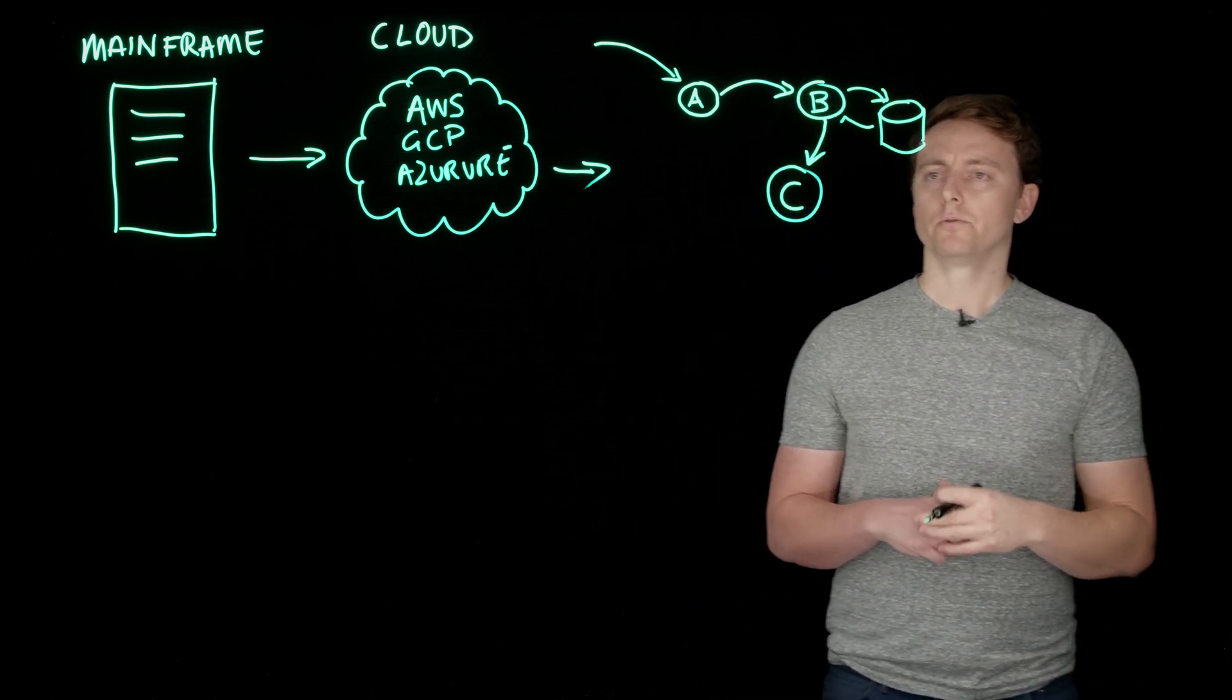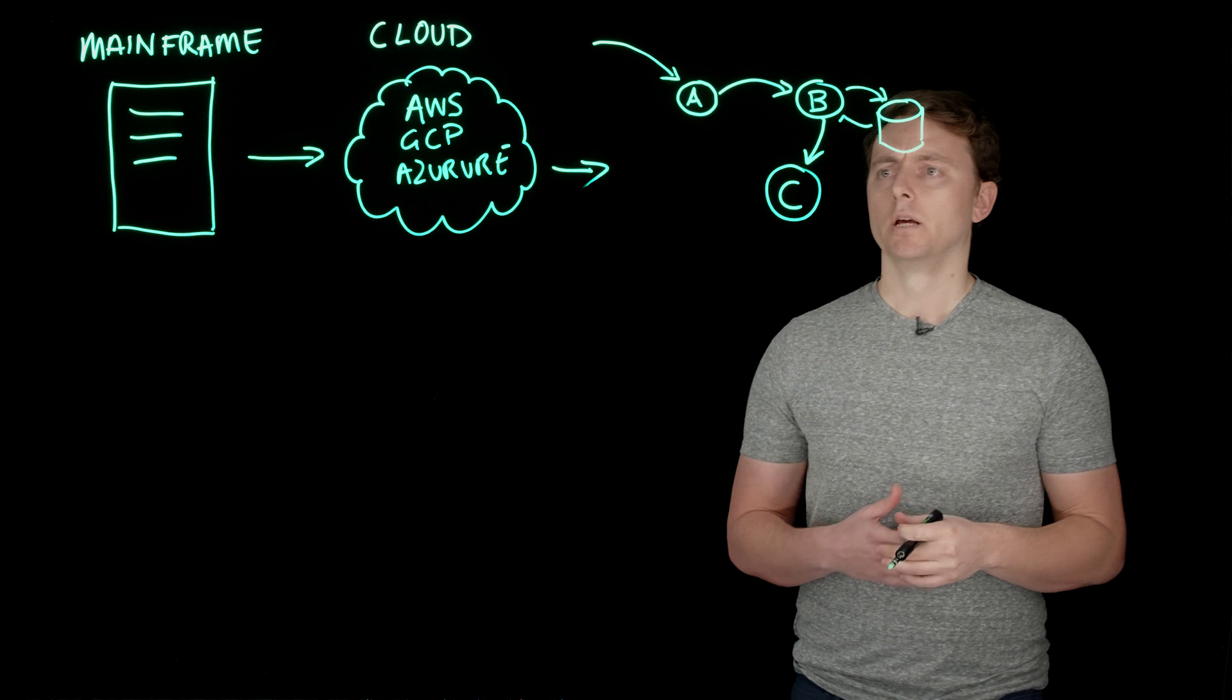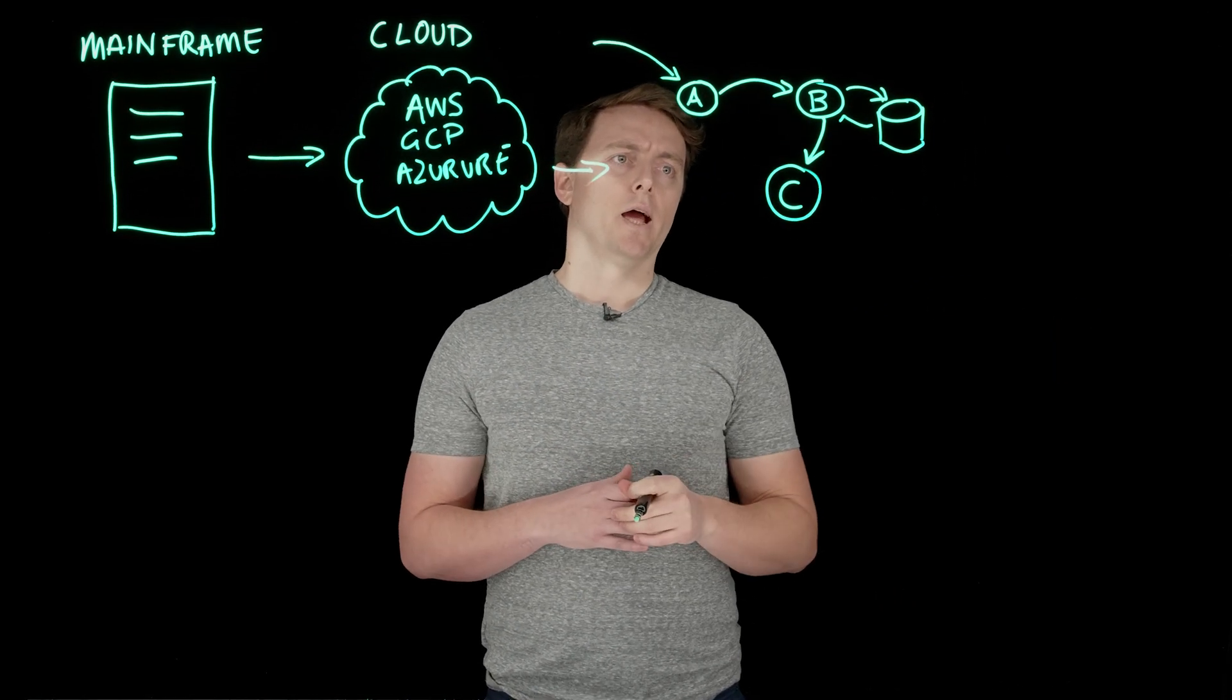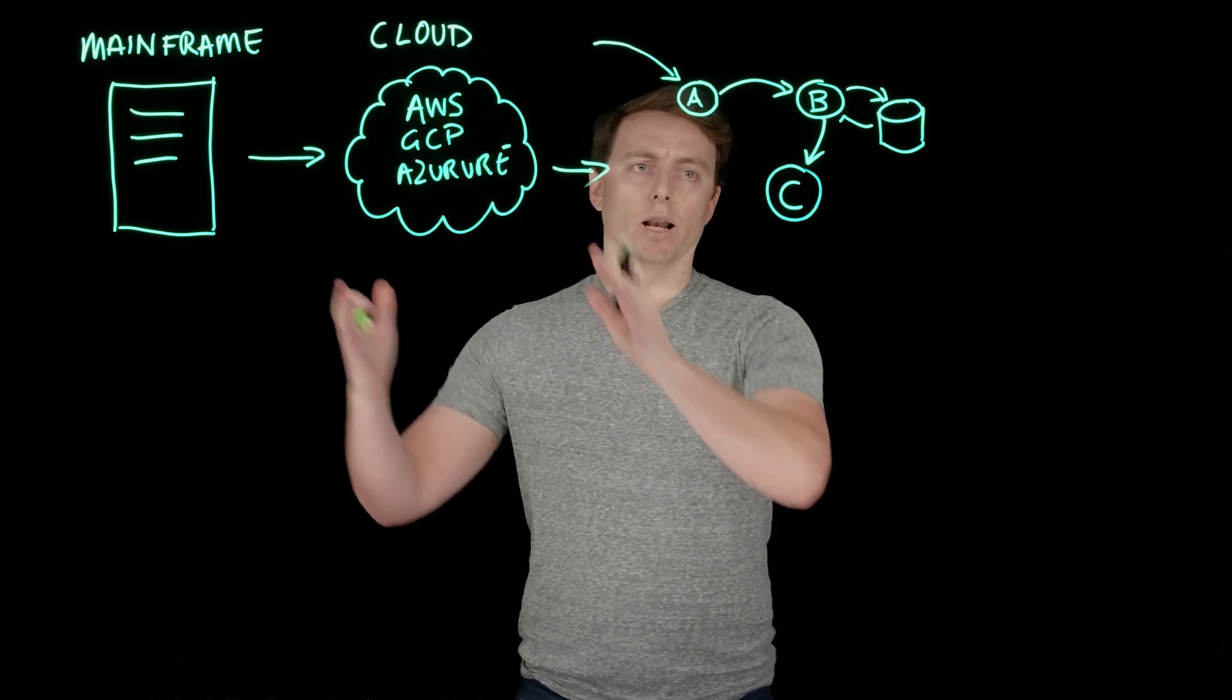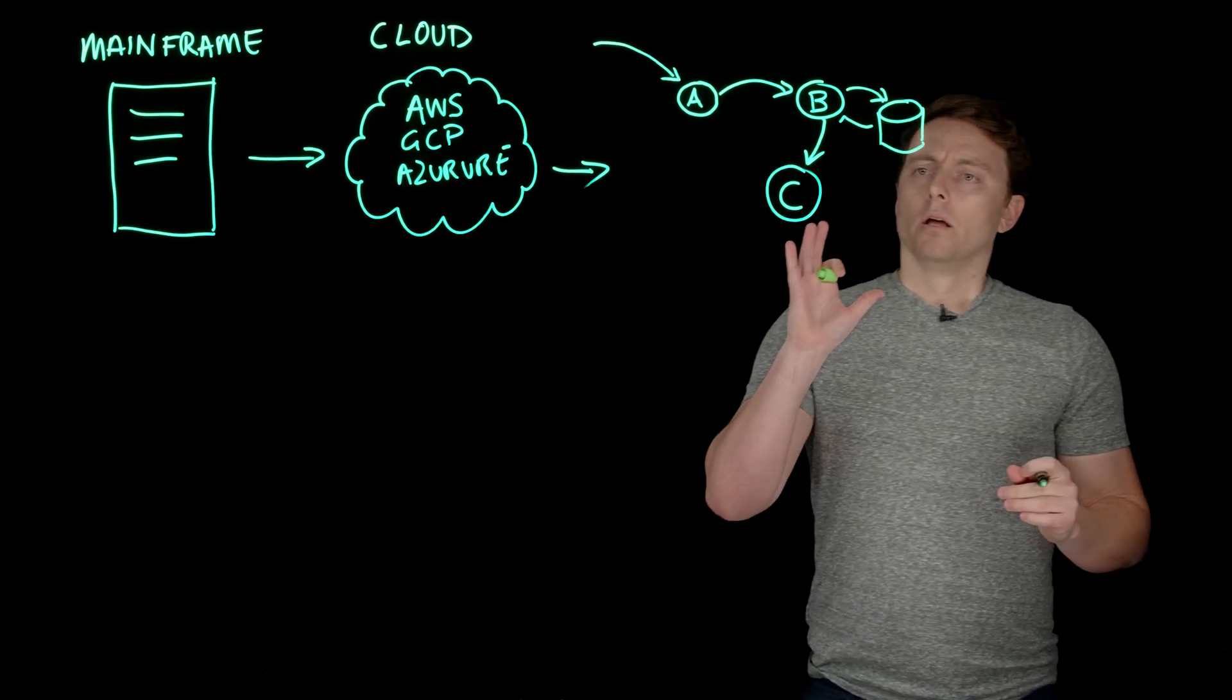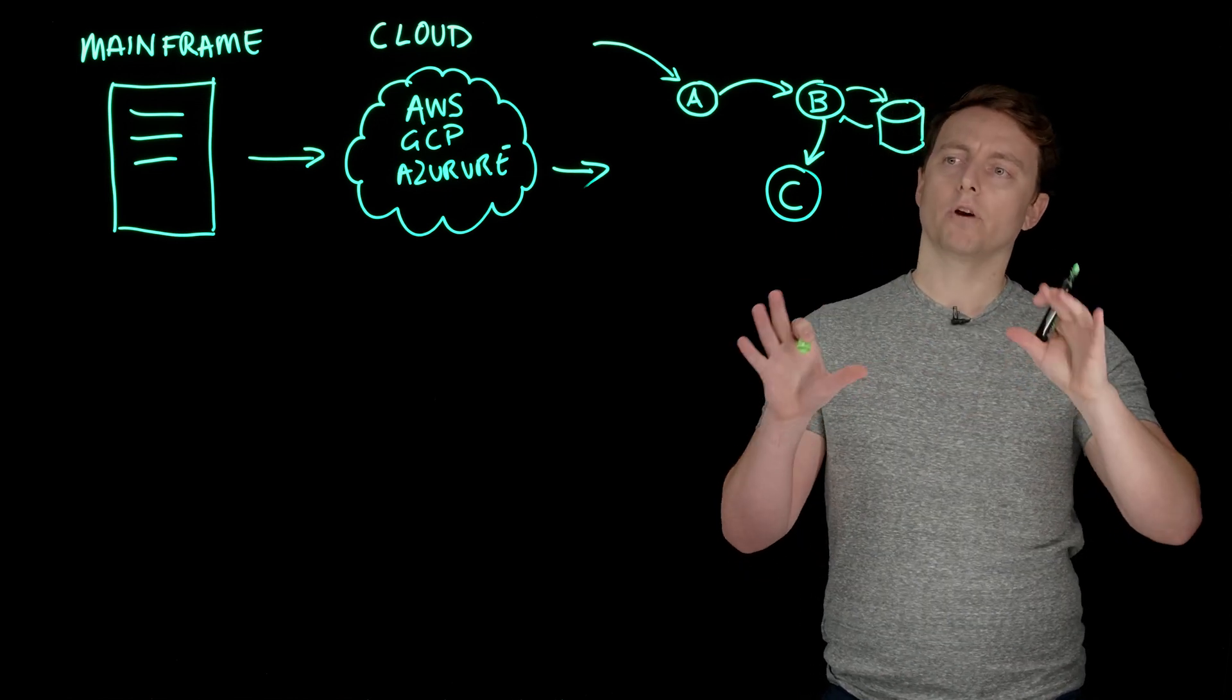This seems reasonable and is a fairly natural progression that many organizations find themselves in because they want to get to a space where they can release code often, decouple teams, and think about the core components of their system, perhaps migrating away from a large architecture where all of this is one big thing. However, as your business scales, you may find that this kind of architecture starts to strain.